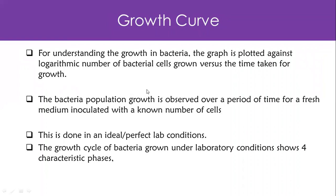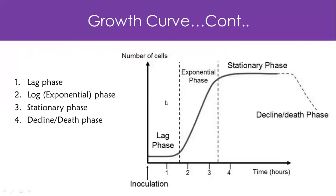If we put bacteria in a very controlled environment, don't interfere with anything, and let it grow, we can develop what we call a growth curve. The curve is basically divided into four phases: the first phase is called the lag phase, then it heads into an exponential phase, or log phase, then a stationary phase, and finally a decline or death phase.